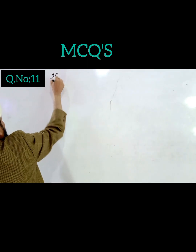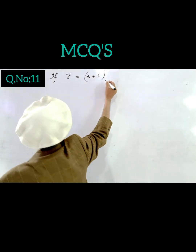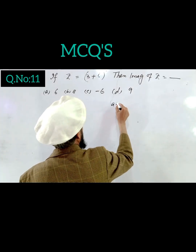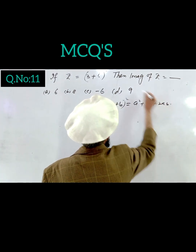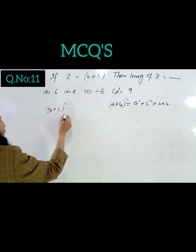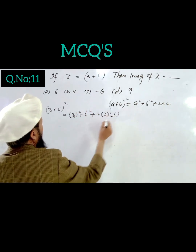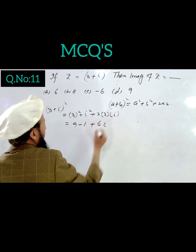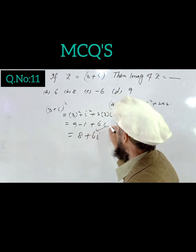Question 15: If z equals (3 plus iota) squared, what is the imaginary part? Using the formula (a plus b) squared equals a squared plus b squared plus 2ab: 3 squared plus iota squared plus 2 times 3 times iota equals 9 minus 1 plus 6 iota equals 8 plus 6 iota. The imaginary part is 6.